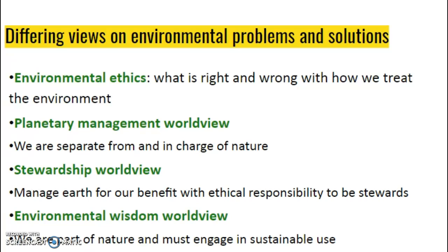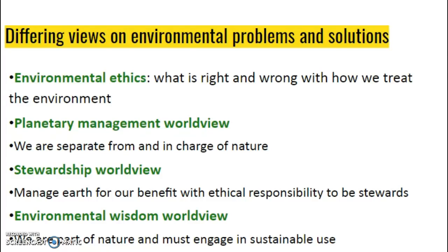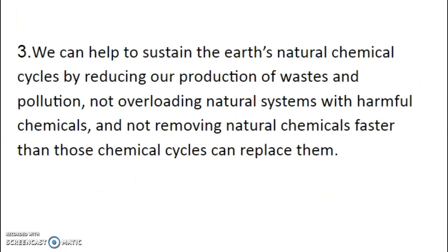I'm going to go quickly through this — don't spend a ton of time on this in your book because the next book doesn't cover it much. Three big ideas: rely more on renewable energy from the sun, protect biodiversity, and sustain chemical cycles by reducing waste and reducing consumption. That's chapter one.